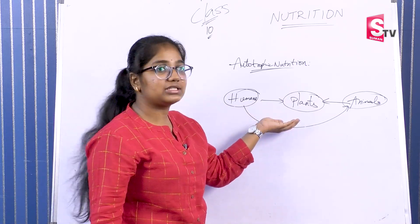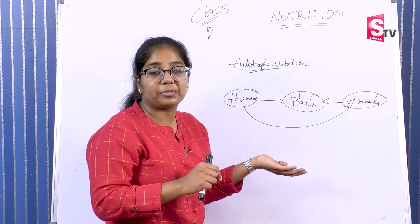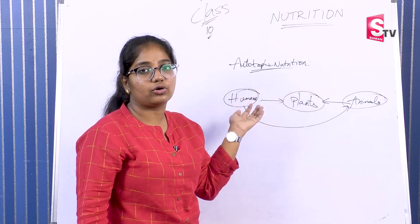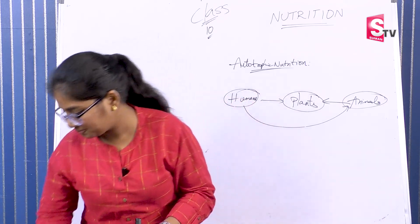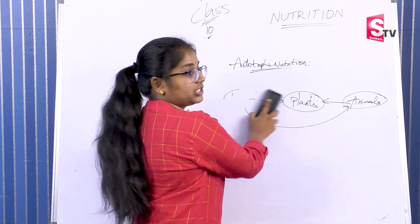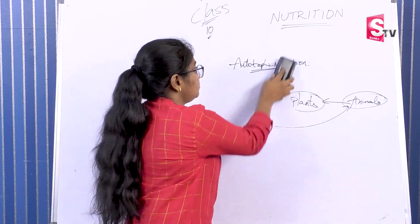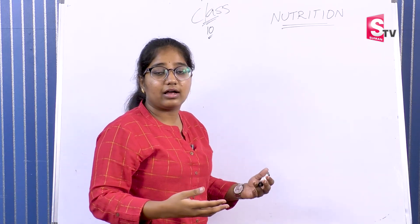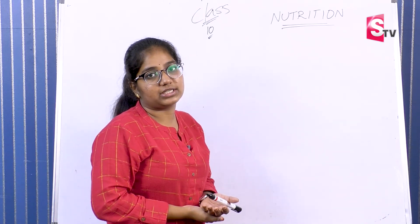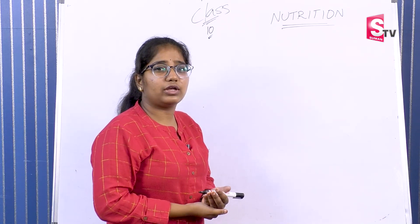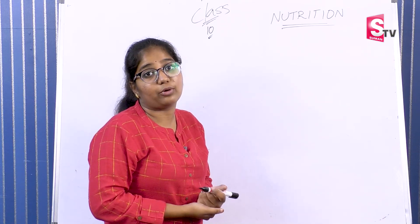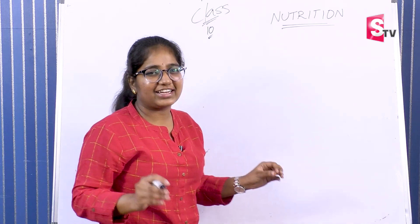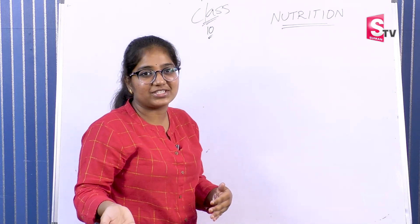For Autotrophic Nutrition, plants need to prepare their own food using sunlight. The process by which plants prepare food is called Photosynthesis.